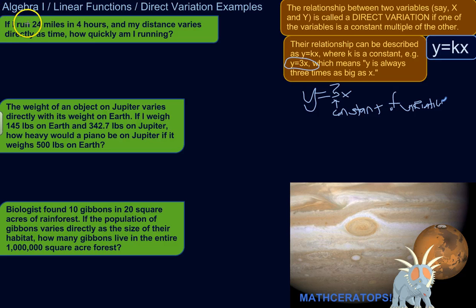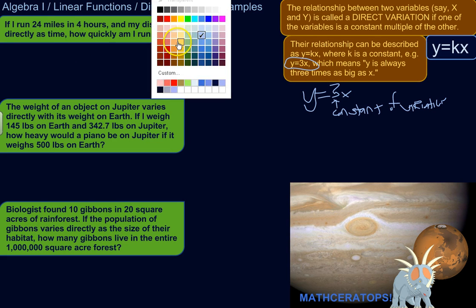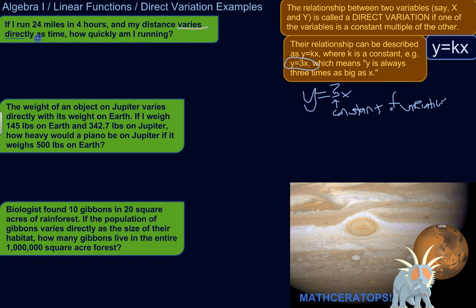So starting off here, if I run 24 miles in four hours, and my distance varies directly as time, so there's my big clue. Distance varies directly as time. So when you see this varies directly as business, you know one thing varies directly as another, that you know you're going to have an equation like this.